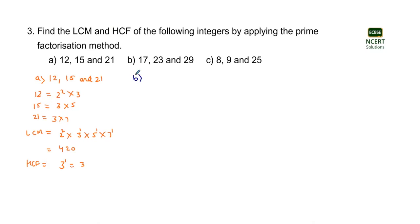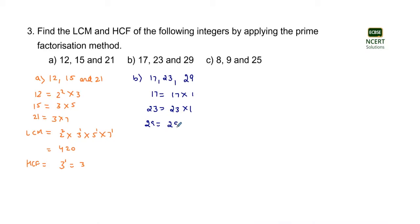Now coming to part B. The numbers provided are 17, 23, and 29. As we can see, all three numbers are prime numbers themselves. Prime numbers can be represented as the number itself into 1, so 17 = 17 × 1, 23 = 23 × 1, and 29 = 29 × 1. For the LCM, it is the product of the unique prime factors of all three numbers, which are 17, 23, and 29.